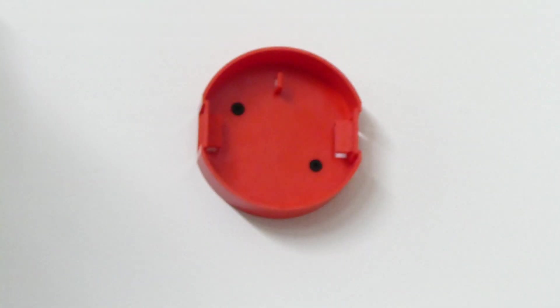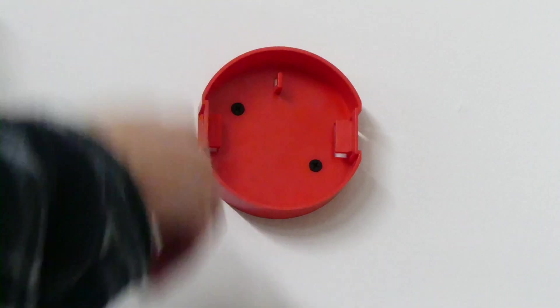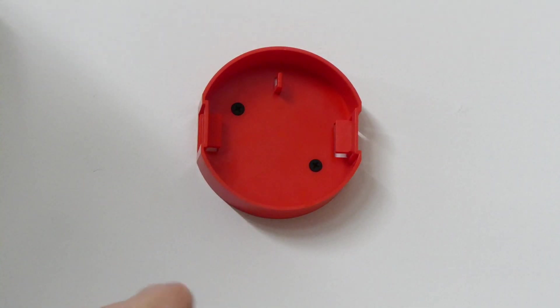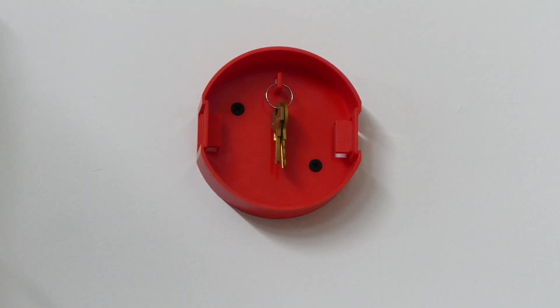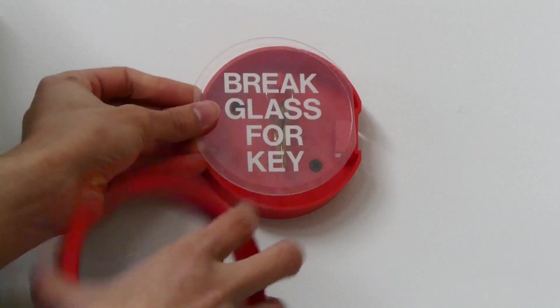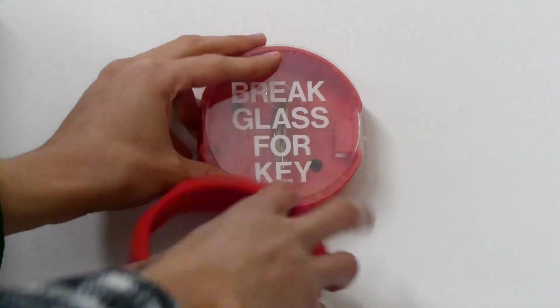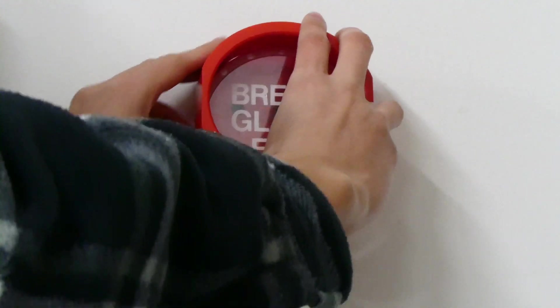There we go, nice and clean on the inside. Then we take our keys, put them in, and then we will go ahead and put the replacement plate back on, and then lastly close it back up again.